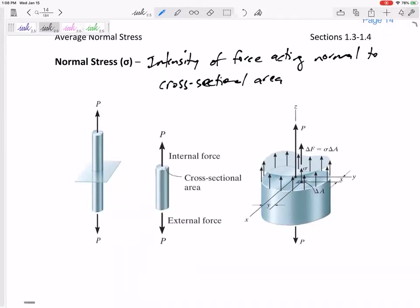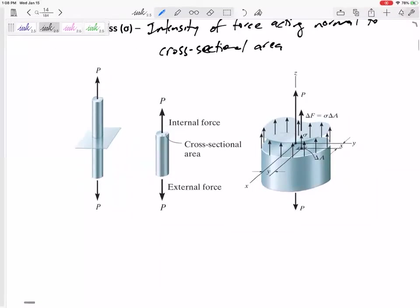I don't know if you understand, but that intensity is kind of just the magnitude of that force on the whole area. All right, so we're going to define normal stress as sigma. So sigma equals N over A.